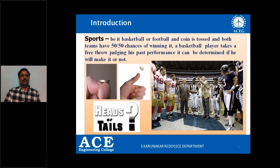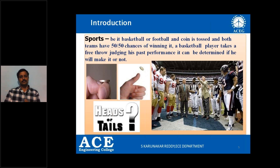In sports also, we come across the concept of probability. When we go for tossing a coin to start a game, there is a possibility of getting two things — head or tail — and each team has a probability of getting the chance equal to half, that is a 50% chance of winning. It may be basketball, football, cricket, or any game. Similarly, when a basketball player takes a free throw, judging his past performance it can be determined if he will make it or not. If he has got maximum goals when a free throw has come, then he will be given a chance to hit a goal.